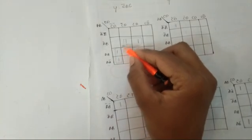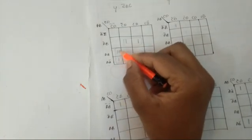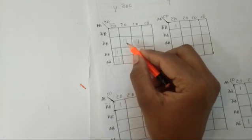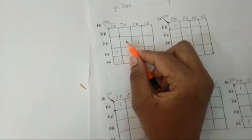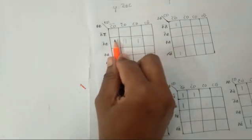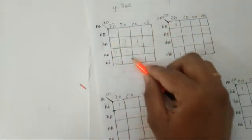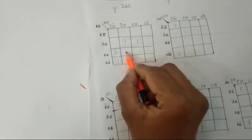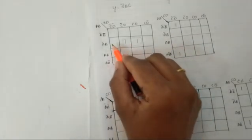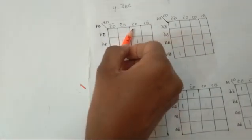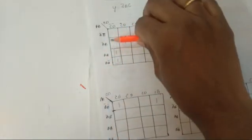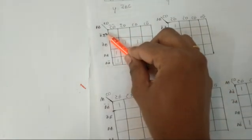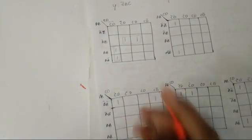If I have a group like this, someone may say these two ones are adjacent and I can make a diagonal pair — but we cannot make a diagonal pair. We are always looking for horizontal or vertical groupings. Diagonal grouping is not allowed. Even if you have ones placed diagonally, you cannot group them.